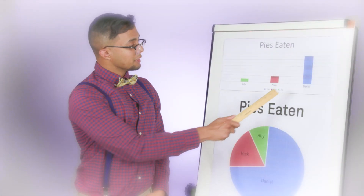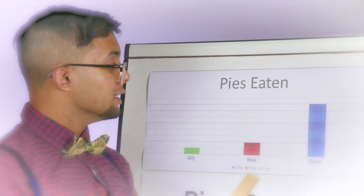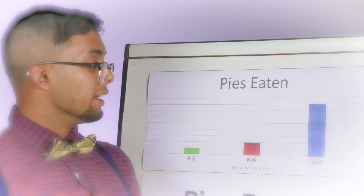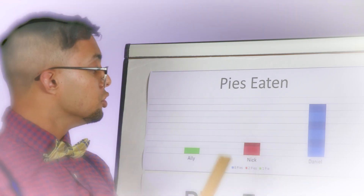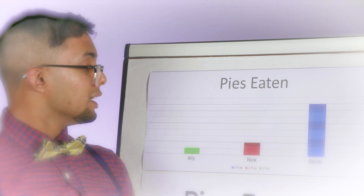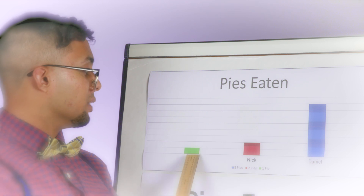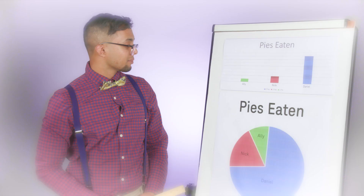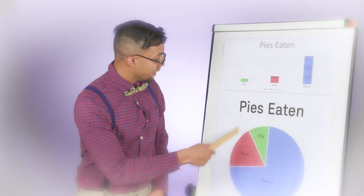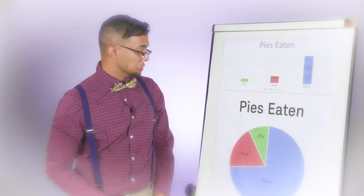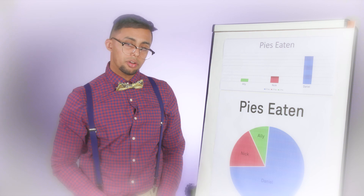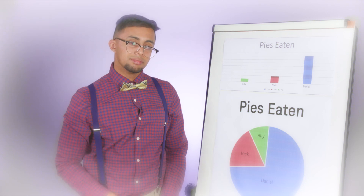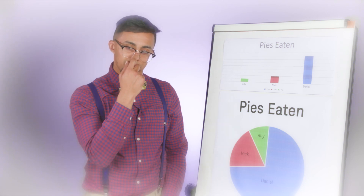Here, we see that Daniel has eaten eight pies, Nick has eaten two pies, and Ali has eaten one pie. And also here, we see that Daniel has eaten the majority of the pies. This can only mean that Daniel really likes pies.